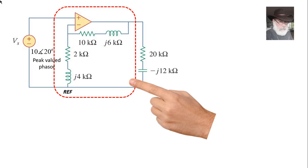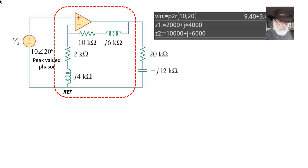Z1 is 2000 plus J4000. Z2 is 10,000 plus J6000. Let's enter those values in the calculator along with the input phasor. Input phasor is 10 with 20 degrees. Z1 and Z2 are defined.